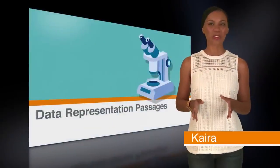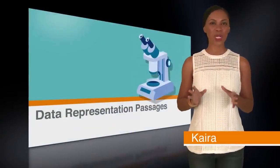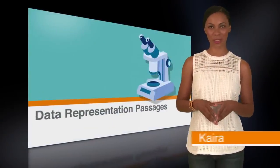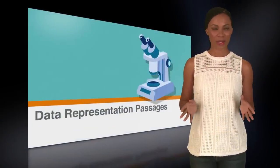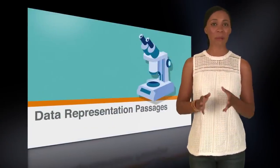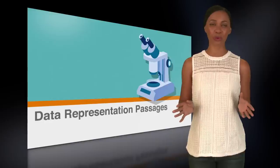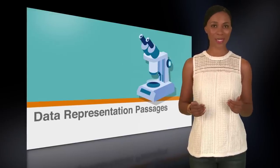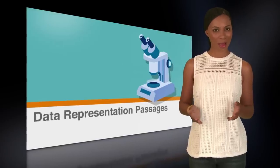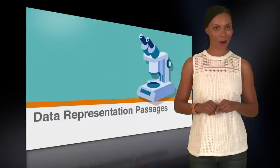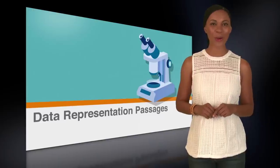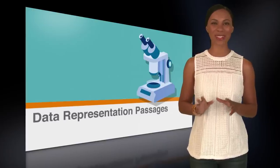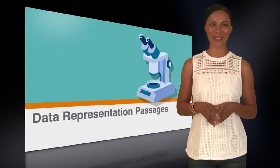Finding data is one of the most important parts of a scientist's job. Without data, it's almost impossible to prove your hypothesis. And my hypothesis? That with my help and your hard work, you're going to get a great score on the science portion of the ACT.